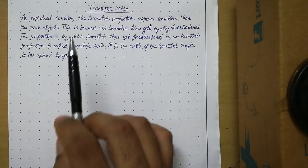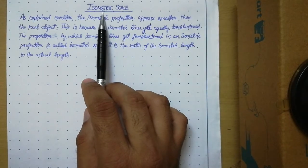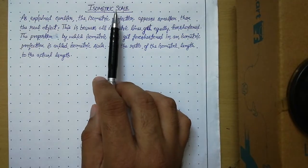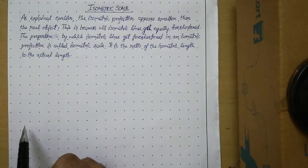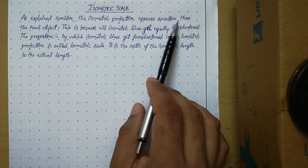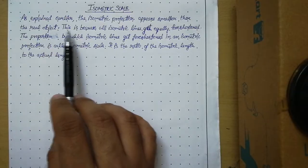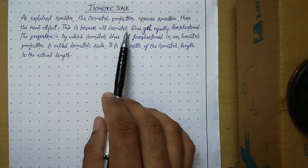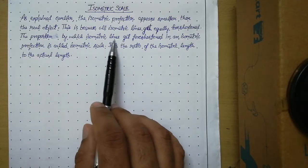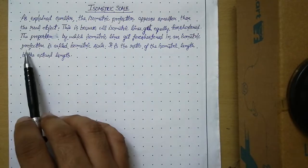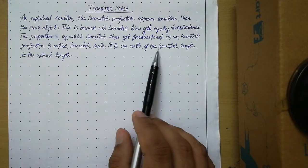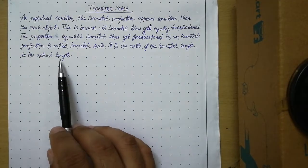Hello students, today we will talk about our next topic of isometric projection related to isometric scale. As explained earlier, the isometric projection appears smaller than the real object. This is because all isometric lines get equally foreshortened. The proportion by which isometric lines get foreshortened in an isometric projection is called isometric scale — it is the ratio of the isometric length to the actual length.